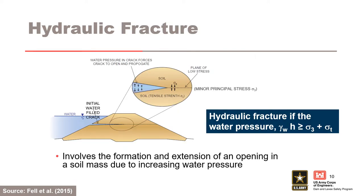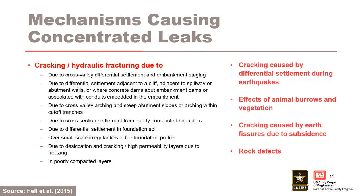Hydraulic fracture involves the formation and extension of an opening in a soil mass due to increasing water pressure. An initial opening forms on the upstream side of the core due to a defect or crack. The water pressure in the initial water-filled crack increases, for example due to an increase in the reservoir level. If the water pressure in the crack exceeds the sum of the minor principal stress and tensile capacity of the soil at the crack tip, then the crack is jacked open and extends further into the core, progressing from upstream to downstream. Hydraulic fracturing can also occur due to the use of high pressures when drilling with water or air, or by pressure grouting. There are a wide range of mechanisms that can create cracks or other defects through which concentrated leaks can develop, many related to differential settlement and poorly compacted or high-permeability zones in the embankment.